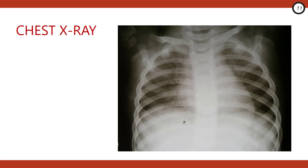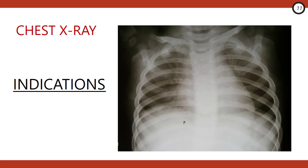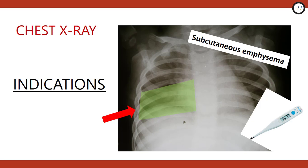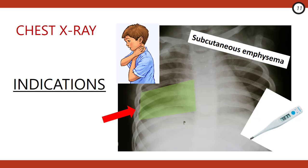Let's talk about chest x-rays, probably the most widely debated investigation for pediatric asthmatics. Although expert opinion indicates it's not unreasonable for first-time wheezers to get a baseline chest x-ray, an unsuspected diagnosis made on the basis of a chest x-ray in an acutely wheezing child is very, very rare. In fact, there are no set of predictors in the literature that can accurately identify children likely to have abnormalities on their chest x-ray. Nonetheless, some situations that might warrant a chest x-ray include focal chest findings, the presence of fever, evidence of subcutaneous emphysema on physical exam, or a history of choking.